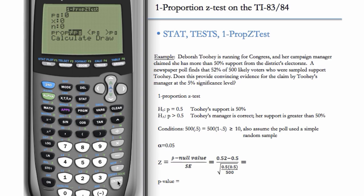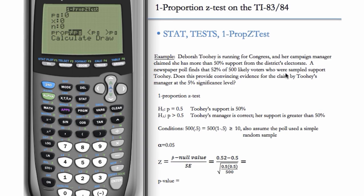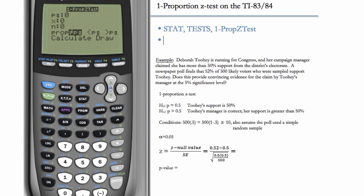So we get the one proportion Z-test, and the first thing it asks for is P sub 0. We have to know P sub 0 is the hypothesized proportion. So we have to enter the hypothesized proportion, which here is 0.5. So we can enter 0.5 and enter.